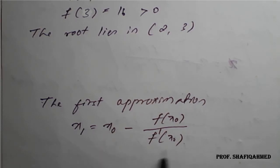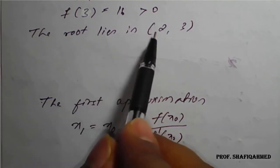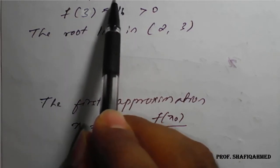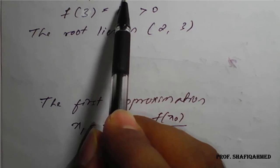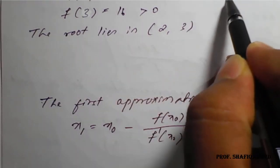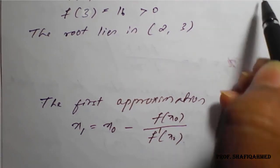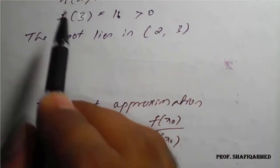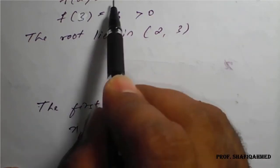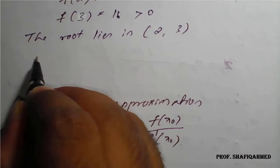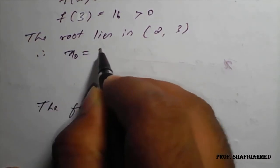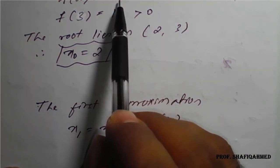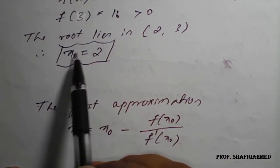For this we need the x naught value and f dash value. To find x naught, f of 2 is minus 1 and f of 3 is 16. Neglecting the sign and placing on a number line, 1 is nearer to 0. Because of x=2 we get minus 1 which is near to 0, therefore x naught value is 2 — whichever value gives a result nearest to 0, that is taken as x naught.